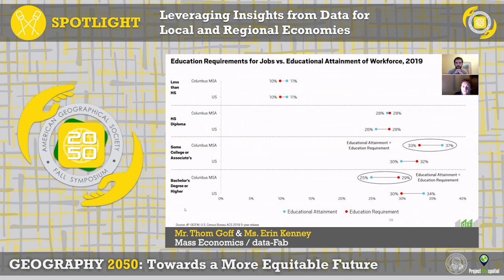We're also able to compare industry data to workforce data — super useful for understanding where gaps might exist between education requirements of jobs and the educational attainment of people living in that geography. This shows the Columbus, Georgia region and the US by education level, where the gaps are and what they are. For example, for some college or associate degree, educational attainment actually exceeds the education requirement, while the reverse is true for a bachelor's degree in Columbus.